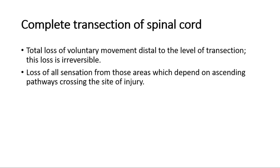For complete transection of the spinal cord, there is total loss of voluntary movement distal to the level of transection. This loss is irreversible. There is also loss of all sensation from those areas which depend on ascending pathways crossing the site of injury.